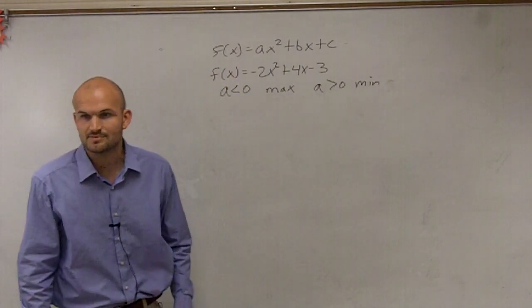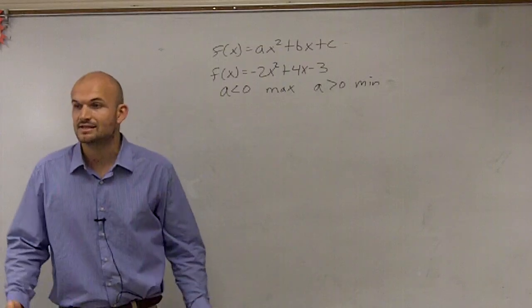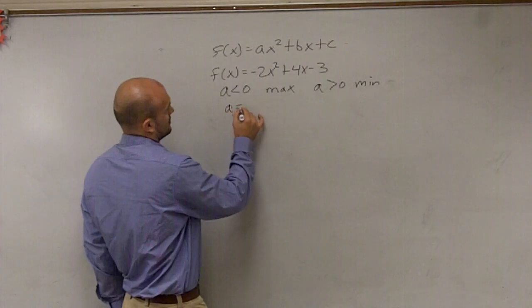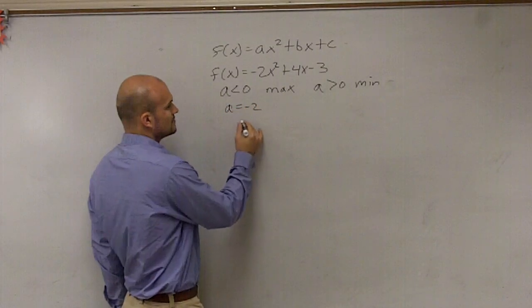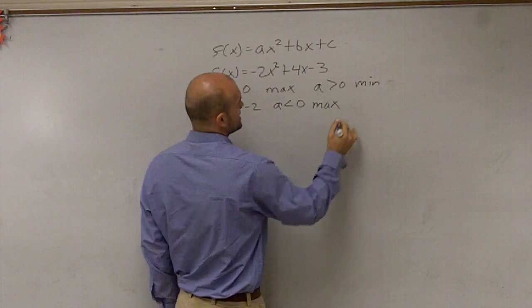So we look at our a. In this problem, we have our quadratic function. And in this problem, our a is equal to what? So a is equal to negative 2. Therefore, a is less than 0, so we're going to have a maximum value.